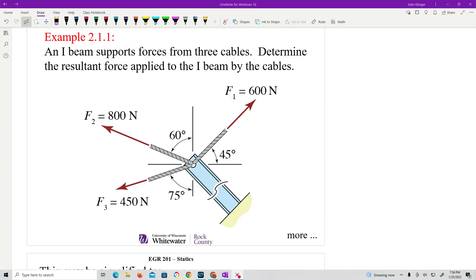Okay, welcome back. I'm going to finish this example, which is 2.21. It states that there's an I-beam. It supports forces from three cables, and we're supposed to determine the resultant force applied to the I-beam by the cables.